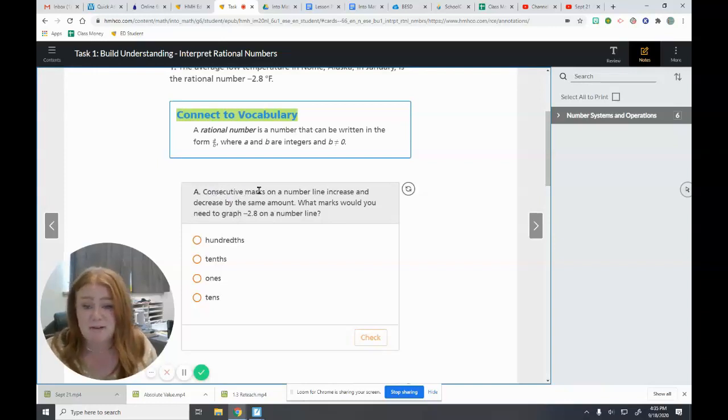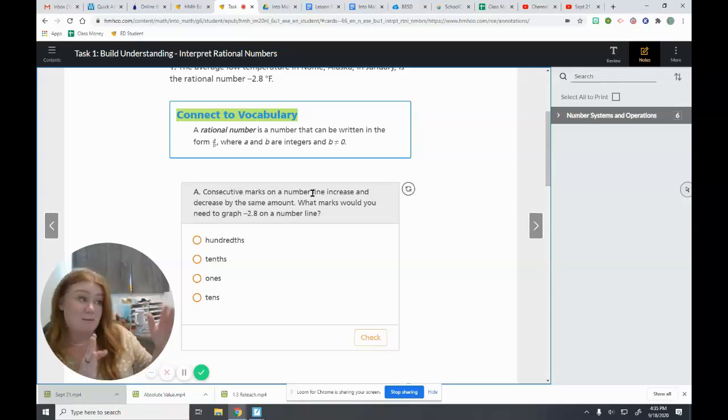A consecutive mark, so that means in order on a number line, increase and decrease by the same amount. When we make number lines, we can't all of a sudden be counting by twos and then start counting by fives. You always need to count by the same thing. If you start counting by ones for all your units, all your units should be labeled with ones. If you do twos, decimals are the same thing.